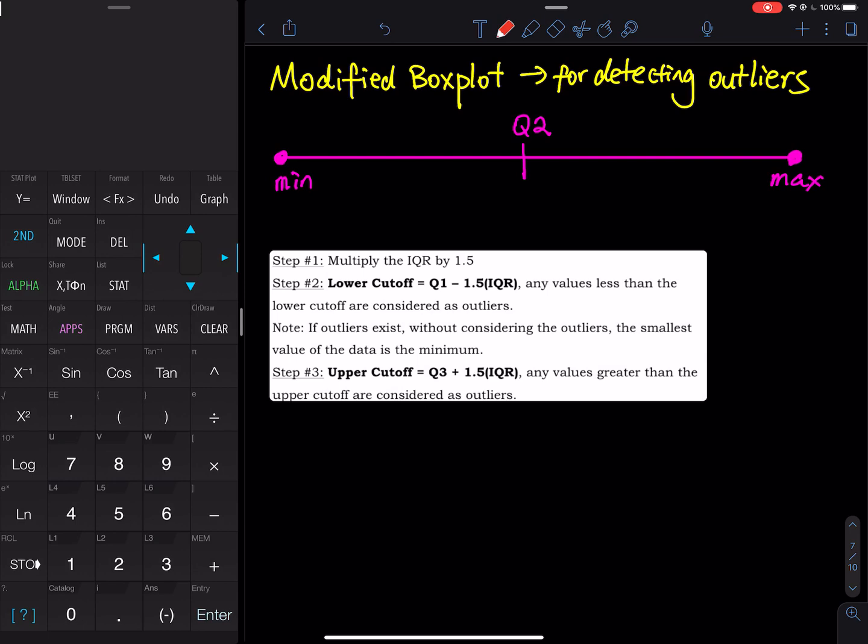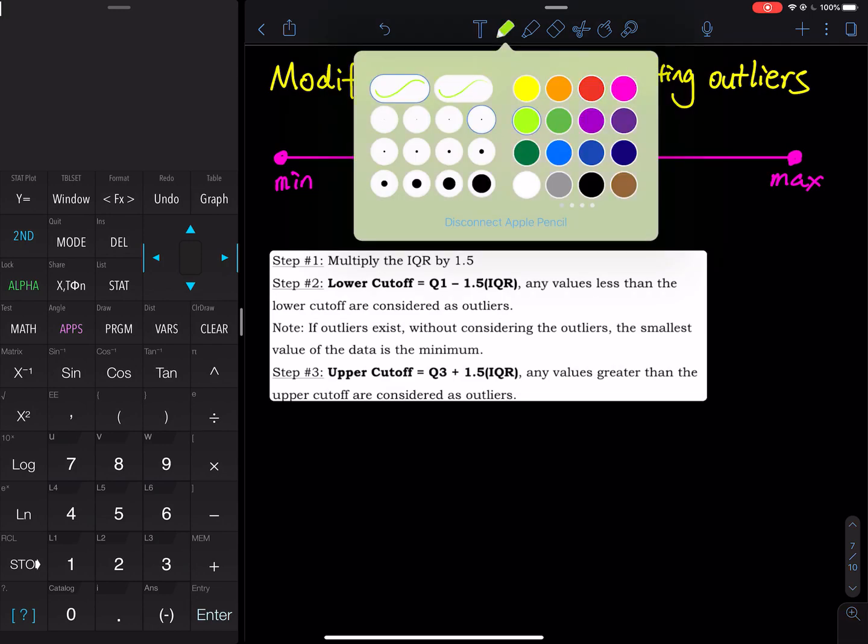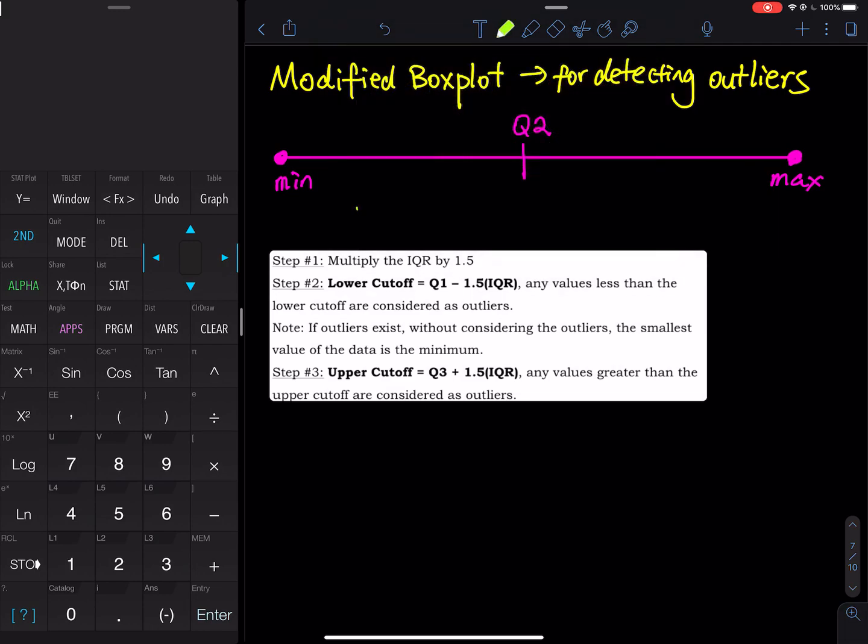And then the Q2 bisects the data into two pieces. So for the piece on the left, we are going to cut this one more time using Q1. So Q1 is right here, the middle of the first half. So this is Q1, and then this is Q3.